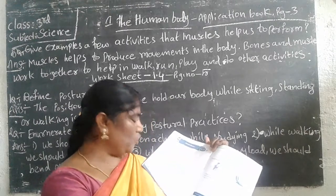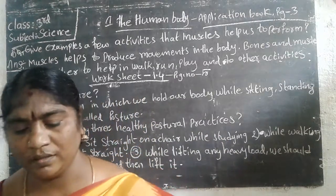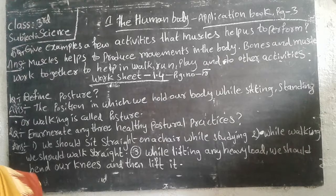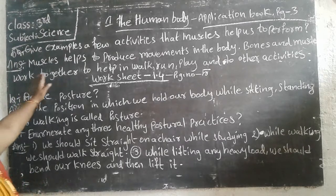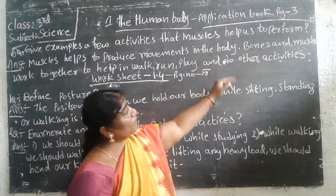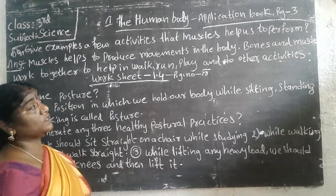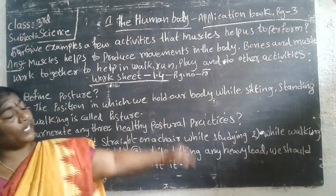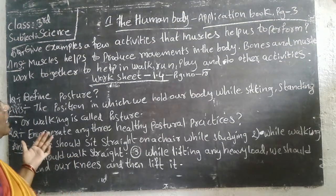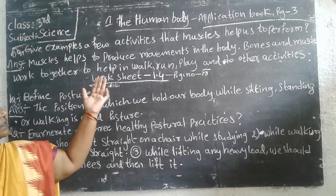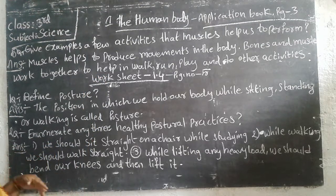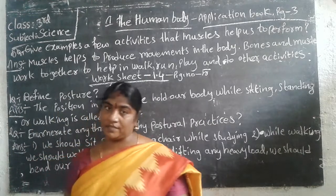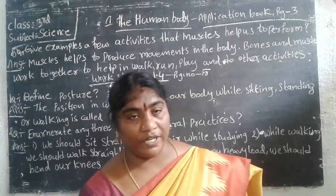We have to complete up to here 4 question answers. Now we have to go to the 5th question: give two examples of activities muscles help us to perform. Muscles help us to produce movements in the body because bones and muscles work together to help in walk, run, play, holding things, working, and different types of activities.